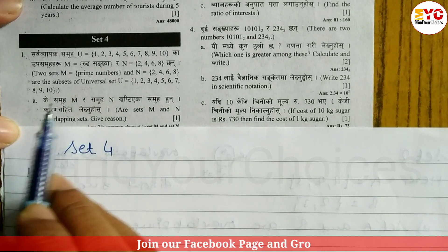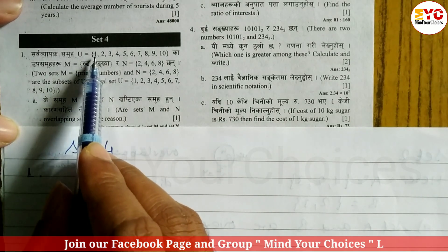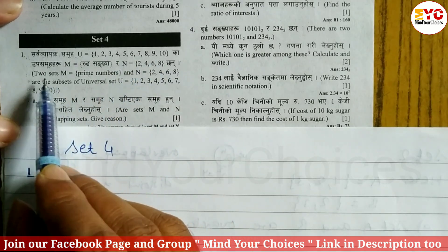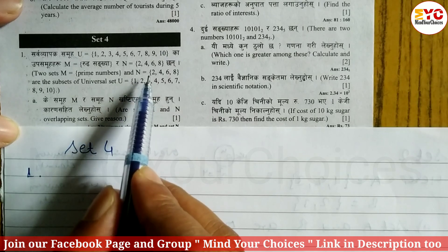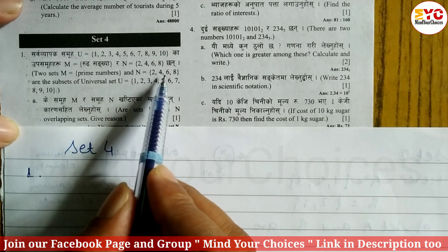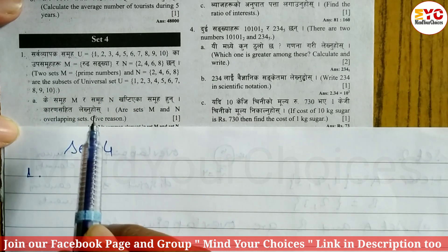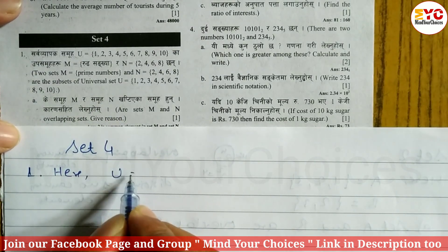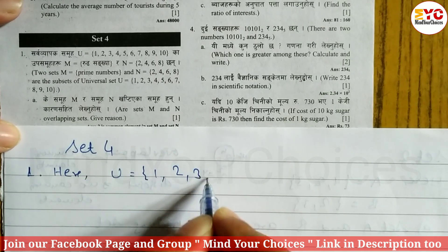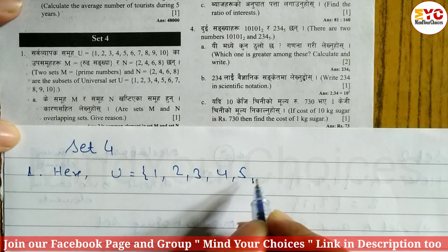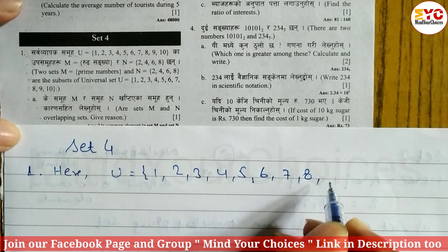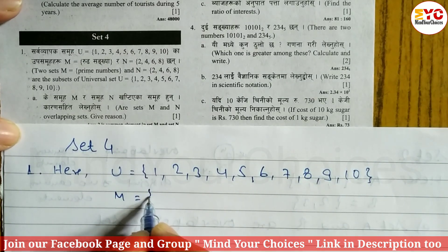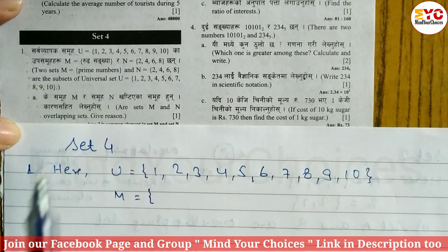Set 4, question 1. You can see here: U is equal to {1, 2, 3, 4, 5, 6, 7, 8, 9, 10} — this is the universal set. N is equal to {2, 4, 6, 8} — the even numbers. M is equal to the prime numbers from the universal set.